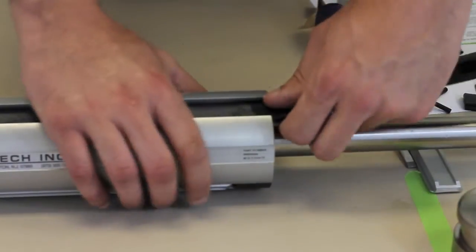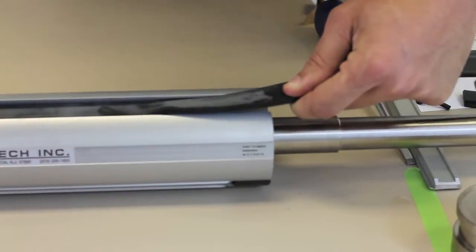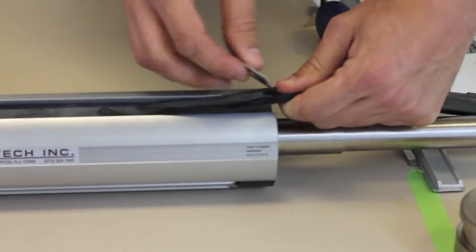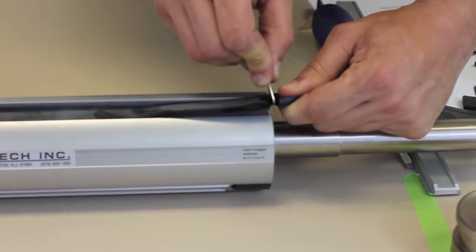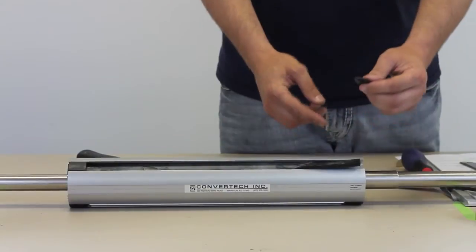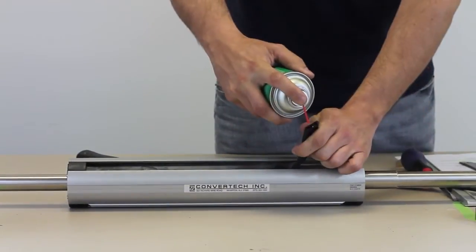Trim the bladder to be flush with the end of the shaft. Insert the second plug and stretch the bladder into the channel.